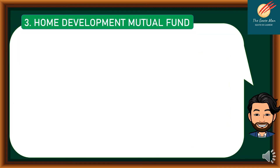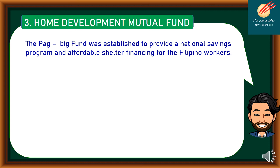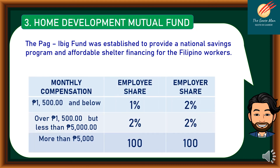The next mandatory deduction is the Home Development Mutual Fund, better known as Pag-IBIG Fund, established to provide a national savings program and affordable shelter financing for Filipino workers. If you receive 1,500 pesos and below, your share is 1% and the employer's is 2%. For compensation between 1,500 and 5,000 pesos, both shares are 2%. If you receive more than 5,000 pesos, your share is automatically 100 pesos and your employer's share is also 100 pesos.